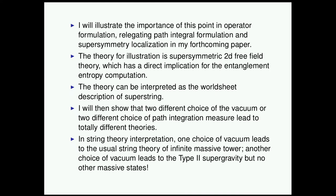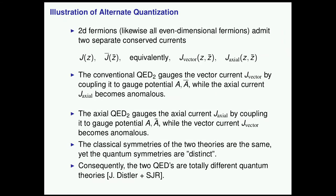The theory for illustration is a supersymmetric 2D free field theory — the extreme limit of localization computation where you set the coupling constant to zero. You can view this as the string worldsheet of superstrings, and it also has direct implications for supersymmetric entanglement entropy computations. I will show that two different choices of vacuum of this free theory — equivalently, two different choices of path integral measure — lead to totally different theories with totally different operator spectra. If interpreted as the worldsheet of NSR superstring, one choice leads to the usual string theory with an infinite tower of massive states, while the other leads to type II supergravity only — no massive tower.